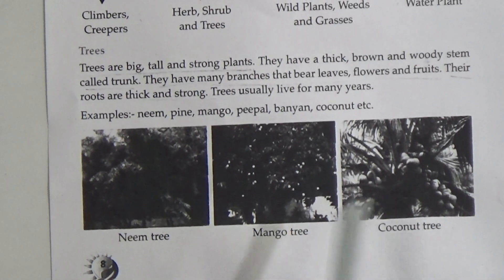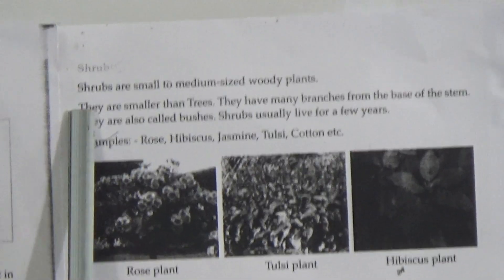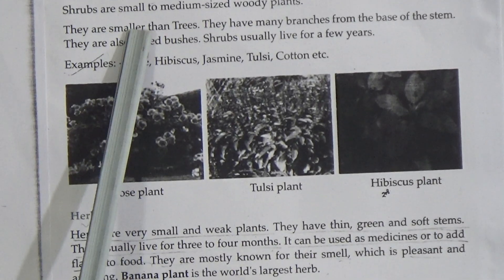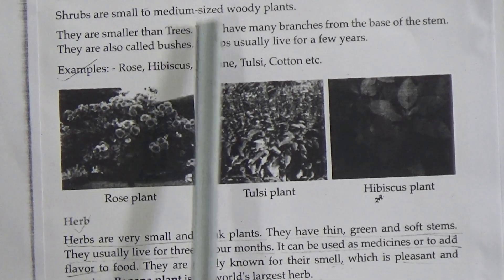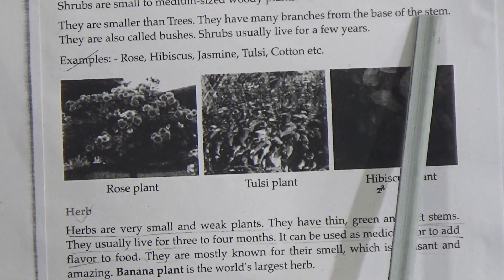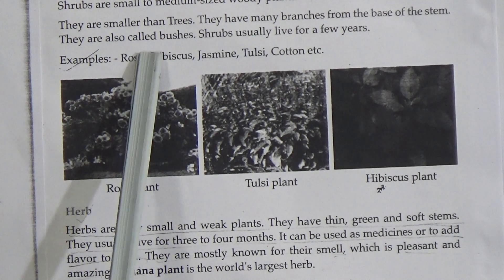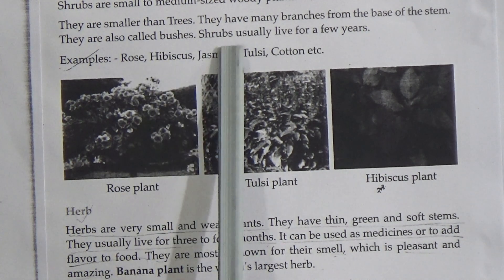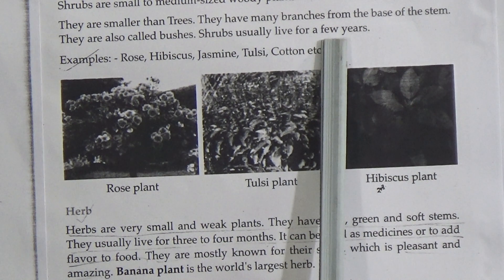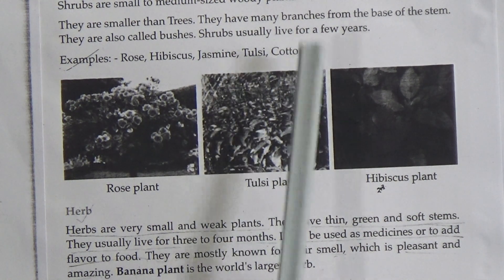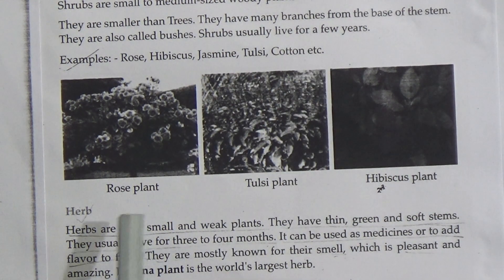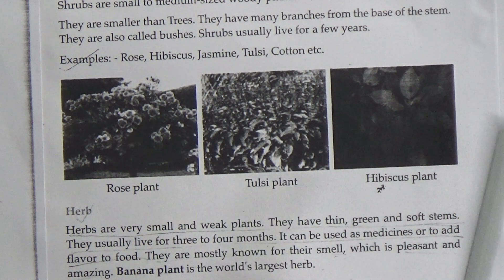Students, now come to page number nine — shrubs. Shrubs are small to medium-sized woody plants. They are smaller than trees. They have many branches from the base of the stem. They are also called bushes. Shrubs usually live for a few years. Examples: rose, hibiscus, jasmine, tulsi, cotton, etc. Here is the picture of rose plant, tulsi plant, and hibiscus plant.